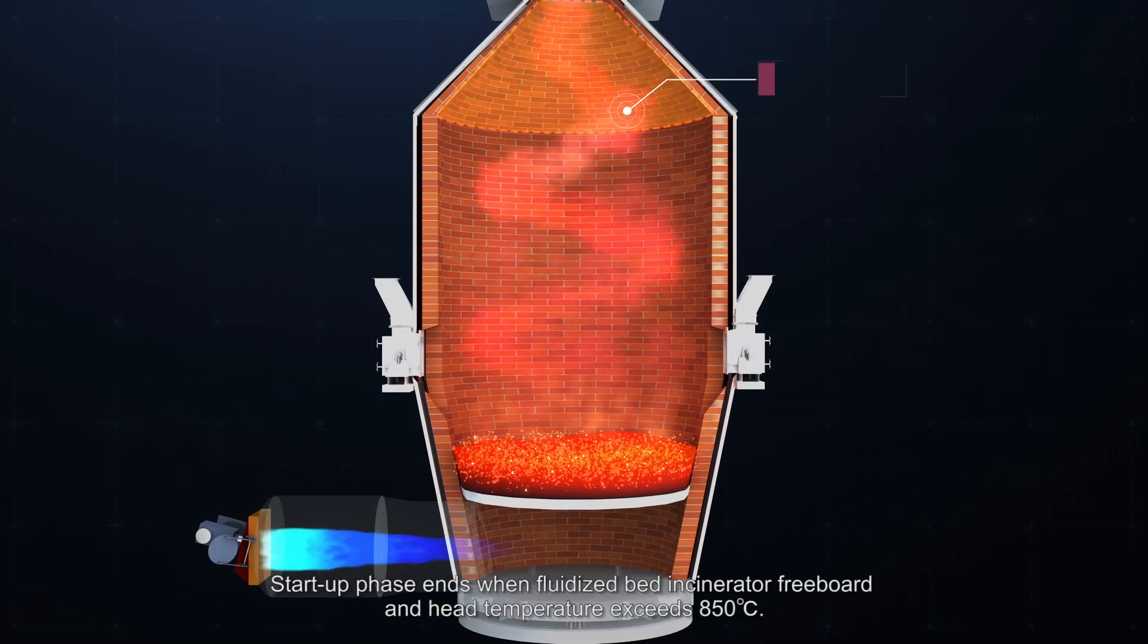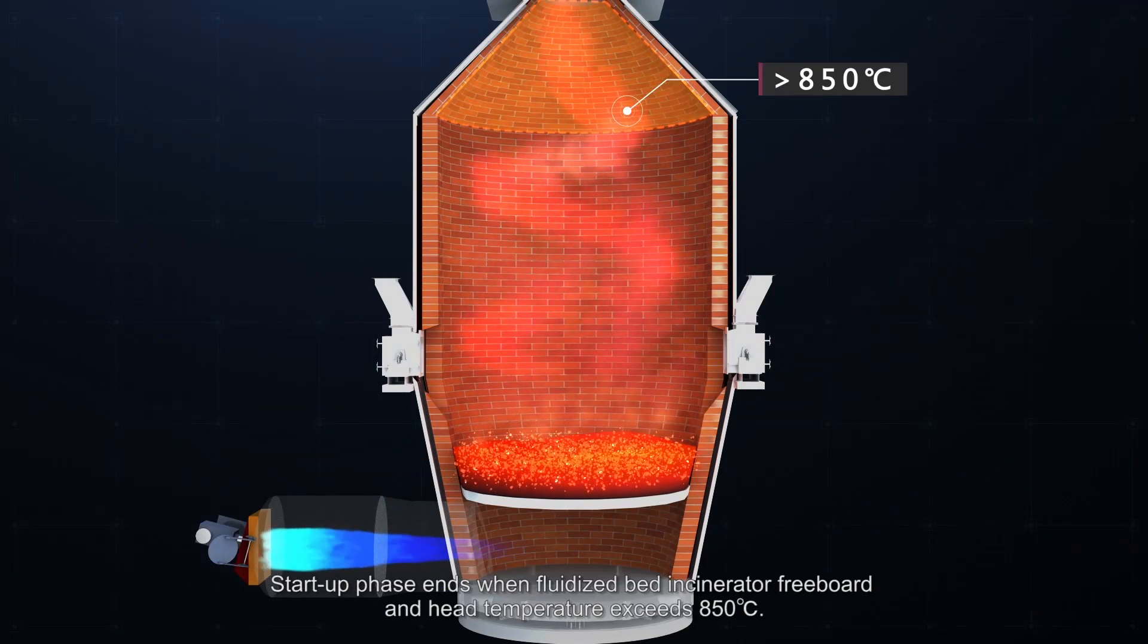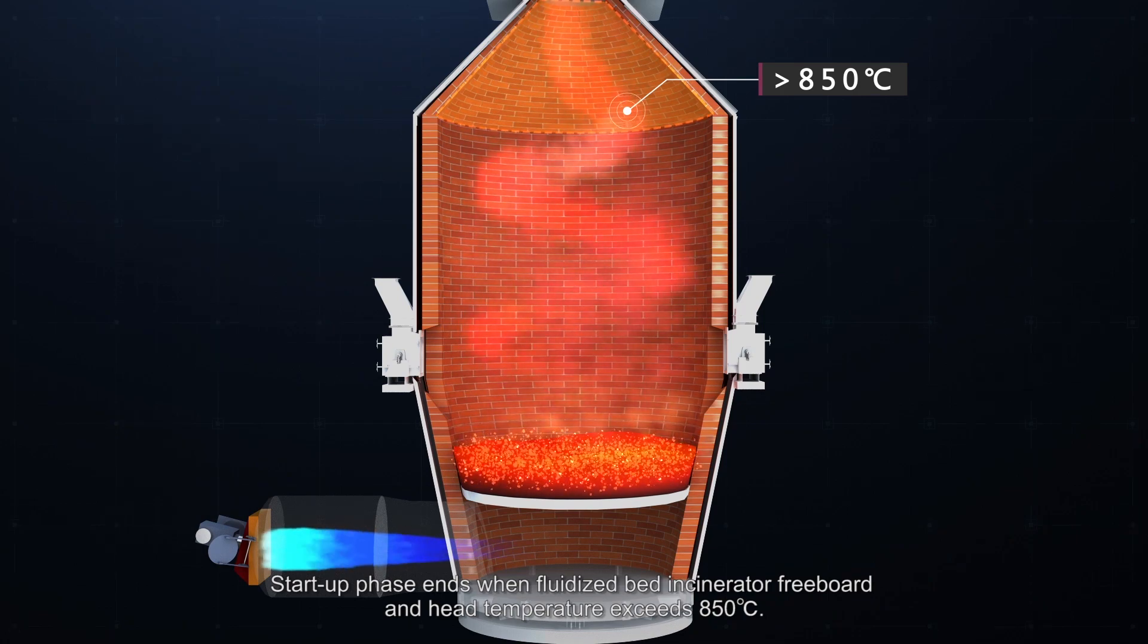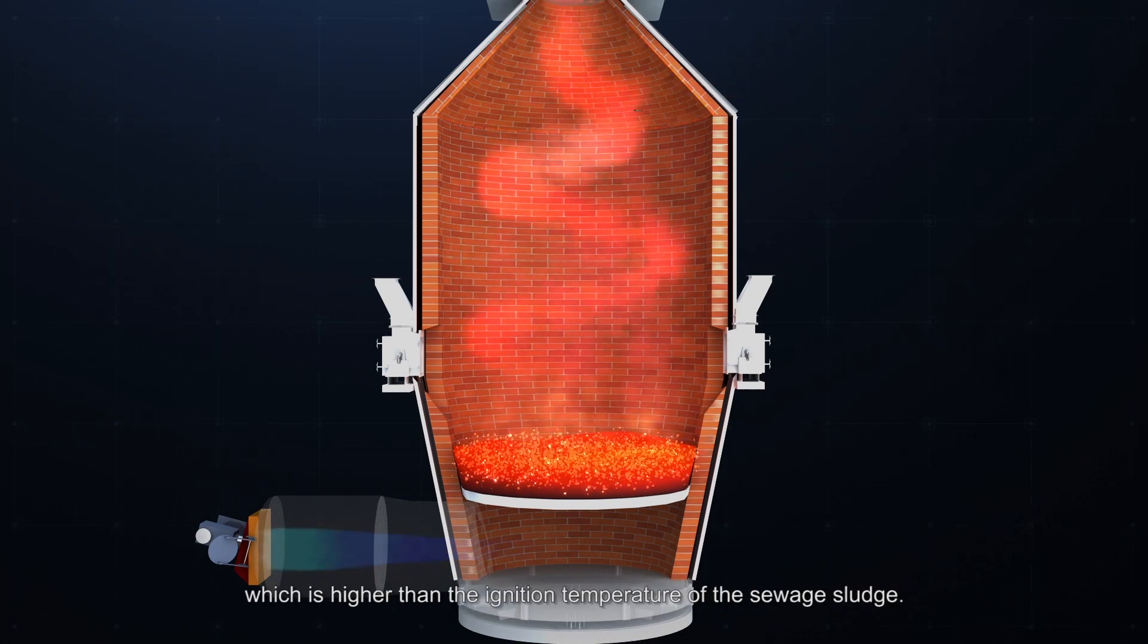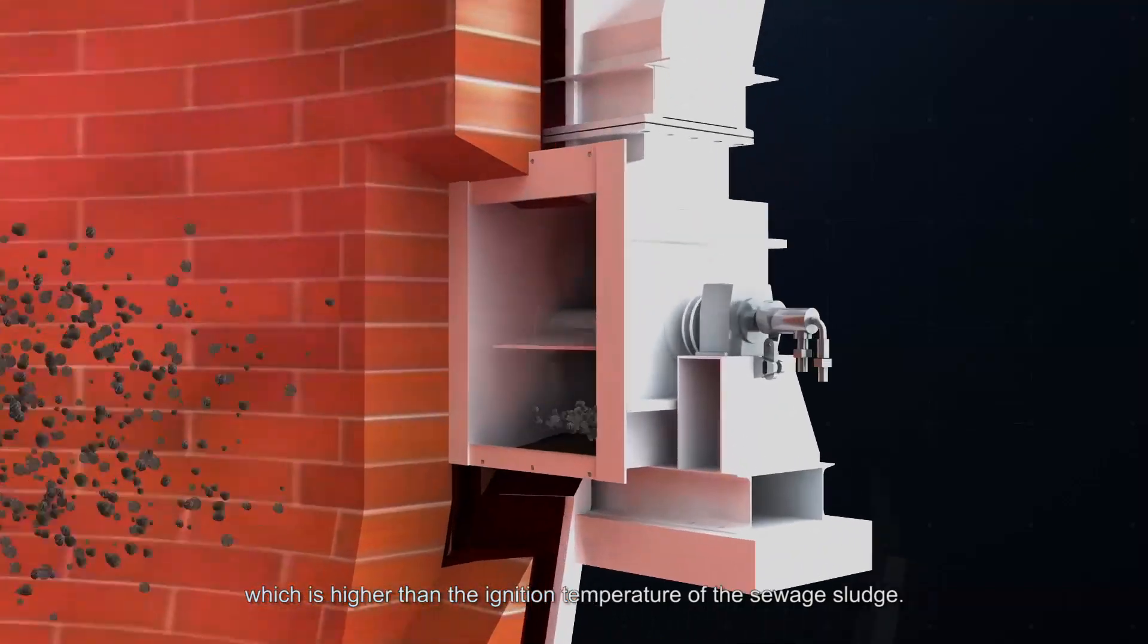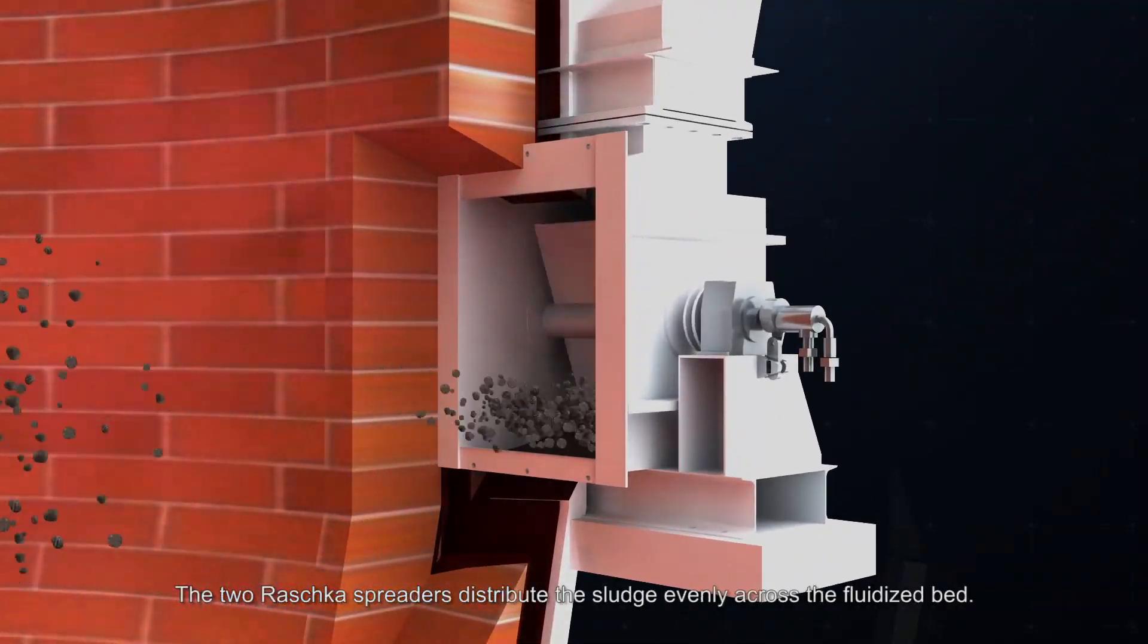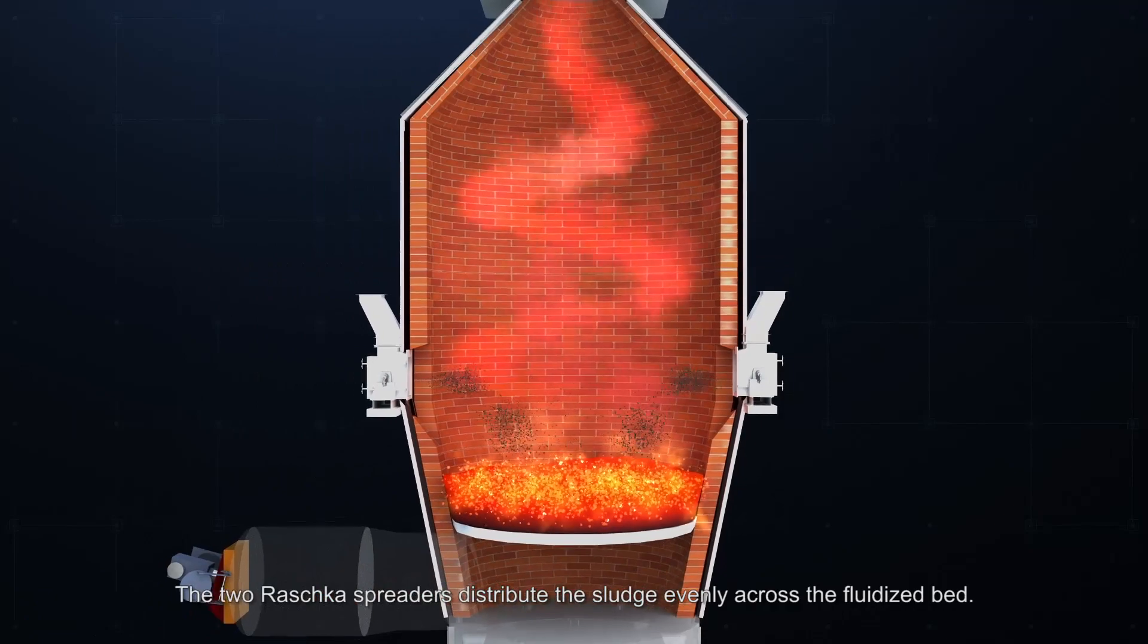Startup phase ends when fluidized bed incinerator freeboard and head temperature exceeds 850 degrees Celsius, which is higher than the ignition temperature of the sewage sludge. The two Raschke spreaders distribute the sludge evenly across the fluidized bed.